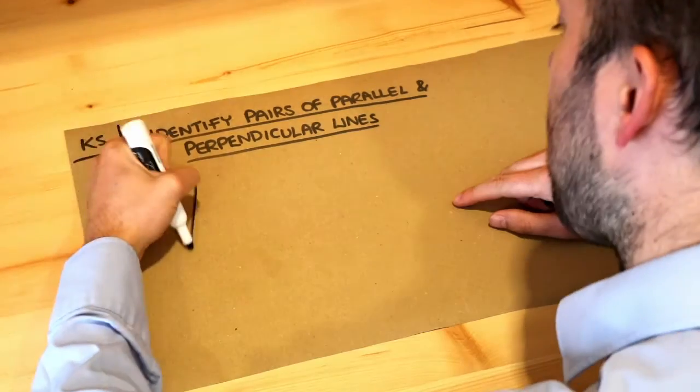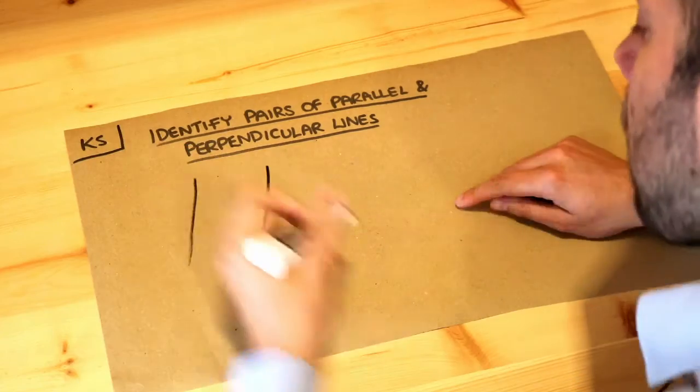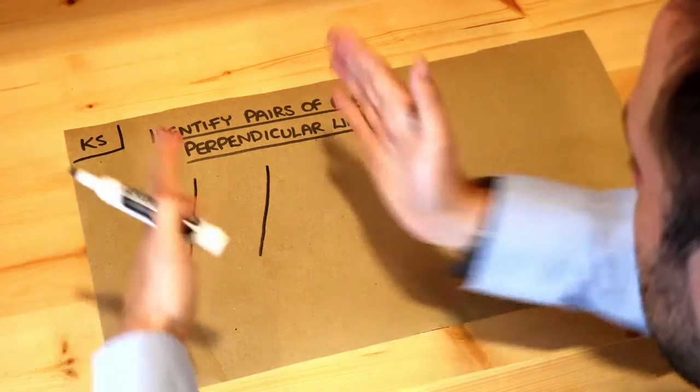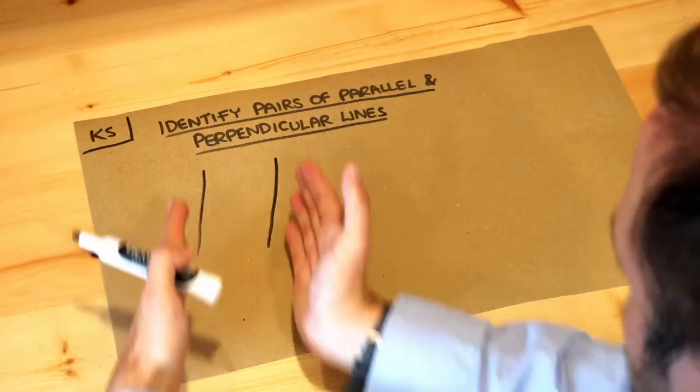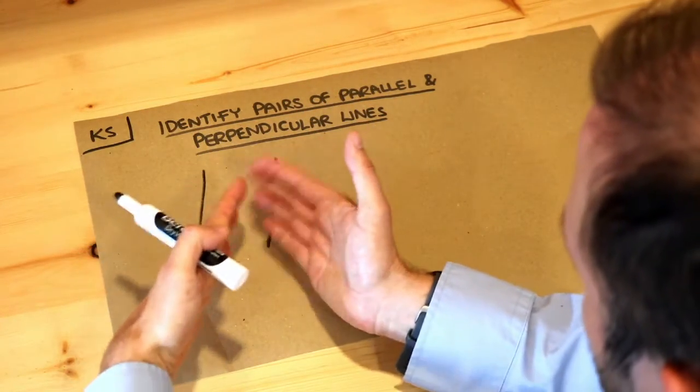Now if two lines are parallel, that means they're in the same direction. So can you see these two lines? They're going in the same direction, and by same direction I mean that the lines are never going to meet.